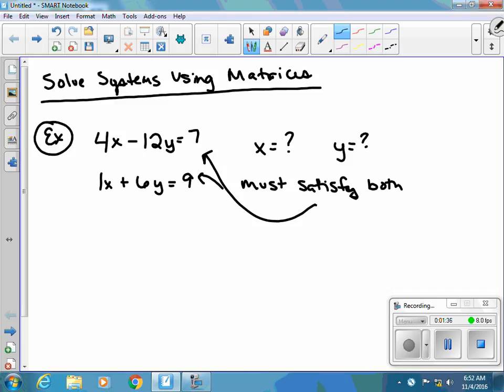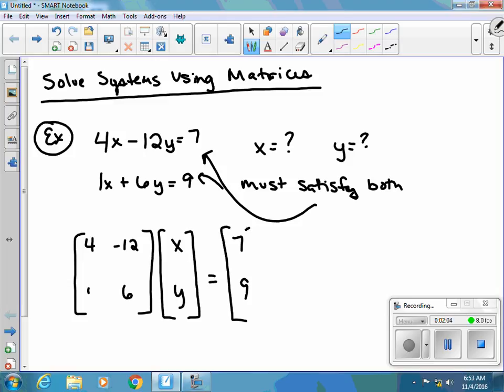So if you notice here, I kind of already can see where this matrix is going. I've got 4, negative 12, 1, 6, and some of you might think, okay, now I've got to add the 7 and 9 in. Not quite that way. So the first matrix is the 4, negative 12, 1, 6, and we're looking at the variables x and y, and they must equal 7 and 9.